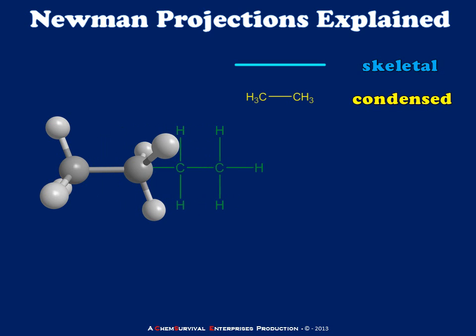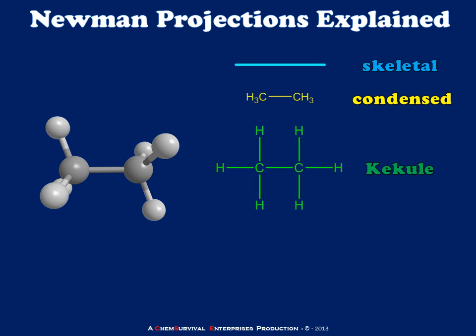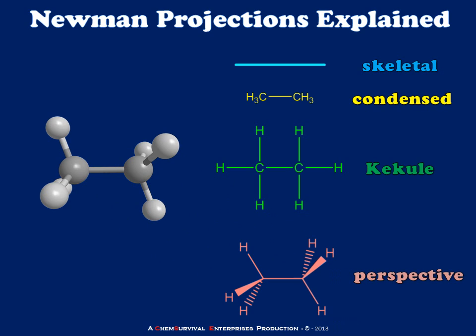To show the bonding arrangements very specifically, we turn to the Kekule structure, in which all atoms and all bonds are shown, but geometric information is very sparse. Finally, we can get some information about the geometry of the molecule using the perspective formula, in which dashed and wedged bonds indicate hydrogens going behind and in front of the plane of the page respectively.